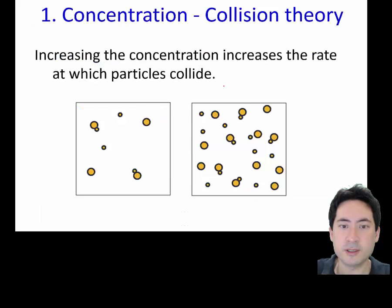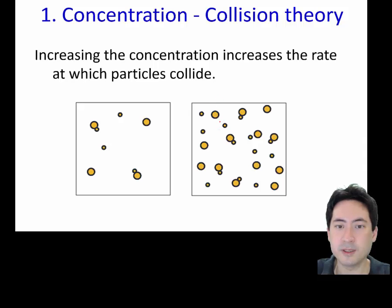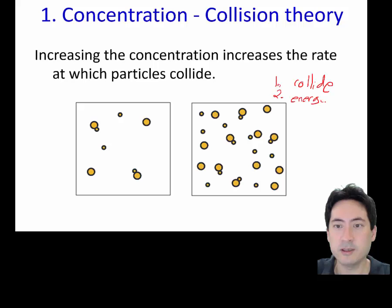Increasing the concentration is like increasing the number of arrows hitting the Spartans and increasing the number of Spartans — the likelihood of them hitting each other increases because there are more collisions. And with more collisions, there's an increased chance that they will have enough energy when they collide, and that they'll be in the right 3D orientation.